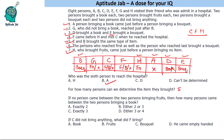Question three: if no person came between the two persons bringing fruits, how many persons came between the two persons bringing a book? H brought fruits, so F also brings fruits. If F brings fruits, then C brings a book and the other undetermined person brings nothing. C brought a book and D brought a book — counting persons between them: one, two, three. So exactly three persons came between the two book-bringers.